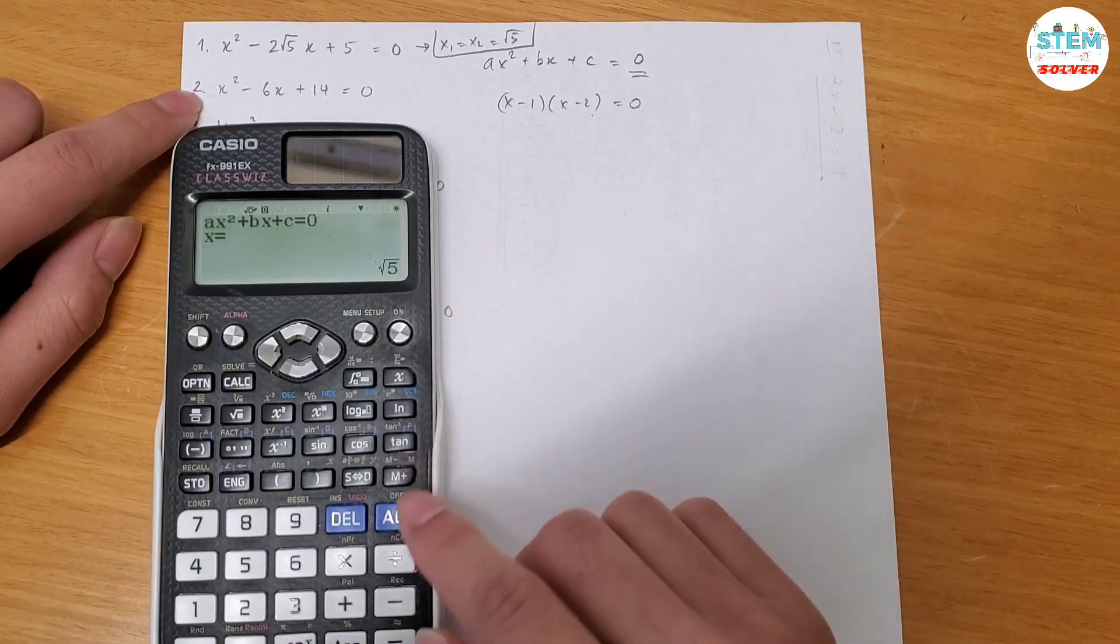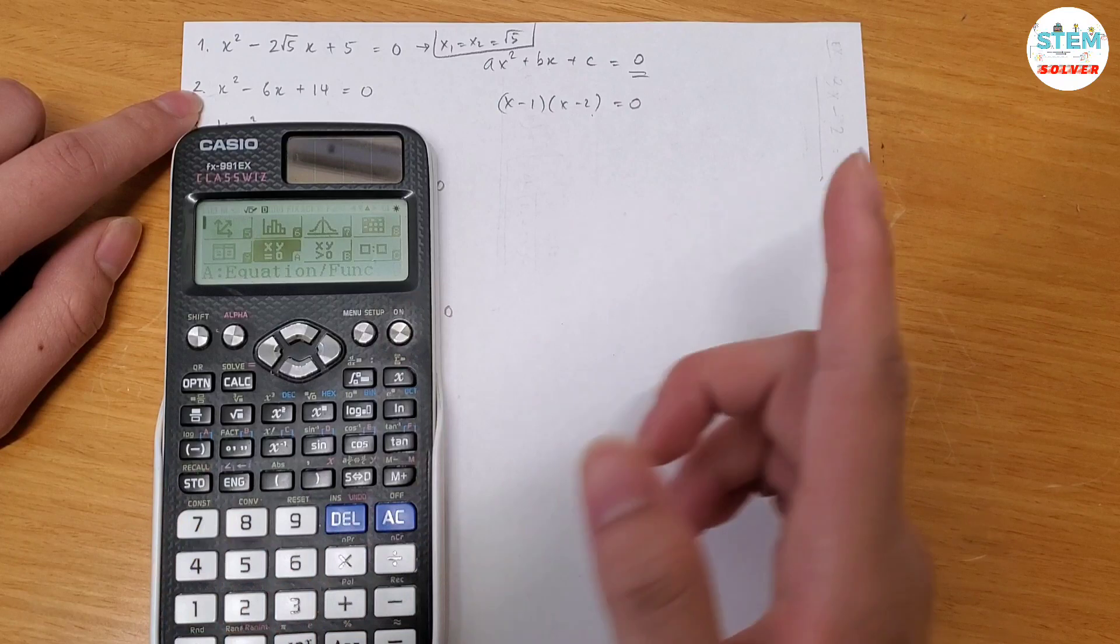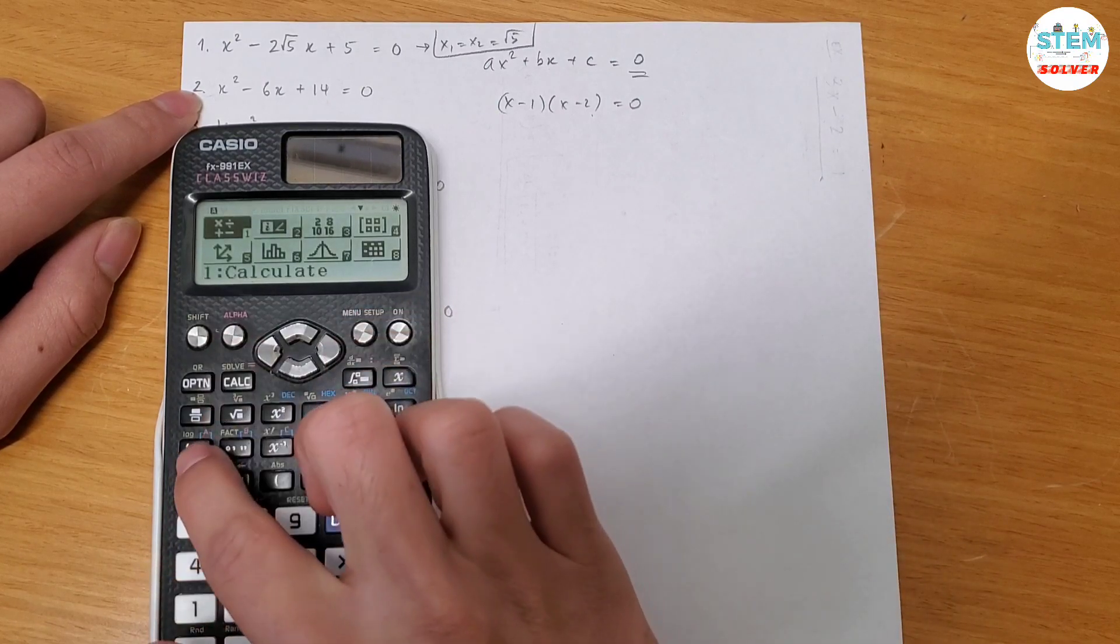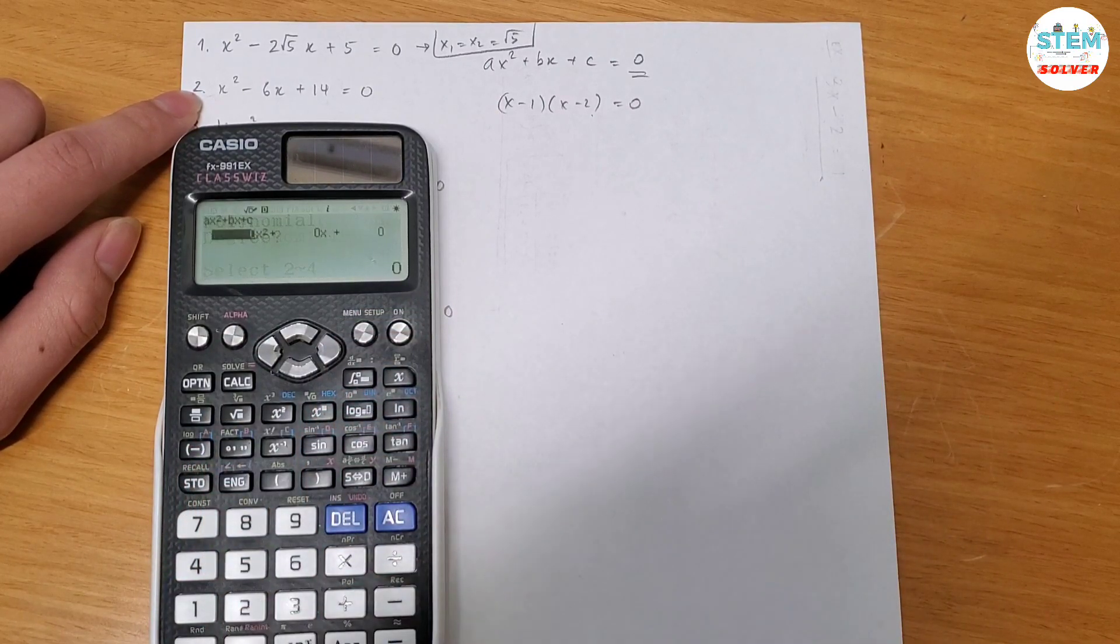So I have the second example here. Okay, let's do it again. Let me exit out. Setup, alpha, A, 2. Alright,